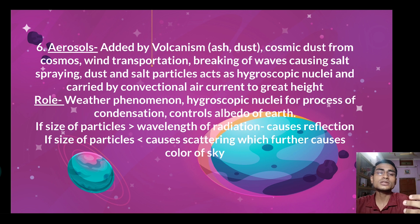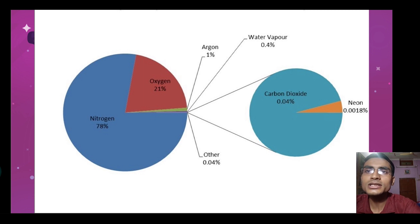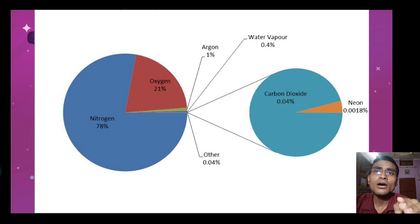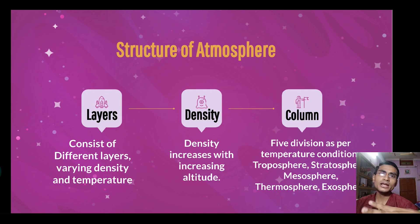The composition of the atmosphere is: nitrogen 78%, oxygen 21%, argon 1%, other gases 0.04%, water vapor 0.4%, carbon dioxide 0.04%, and neon 0.001%. This is the crux of the complete composition of the atmosphere.